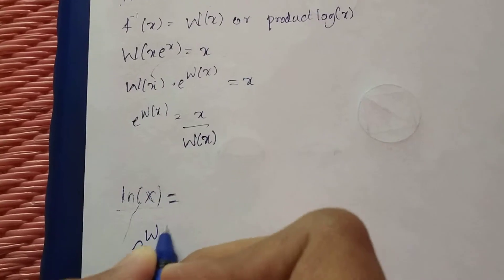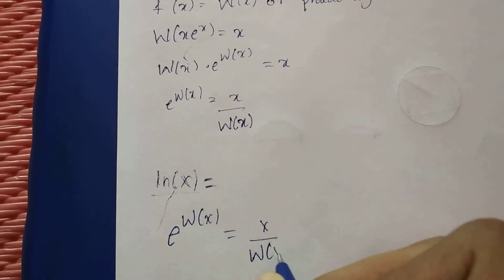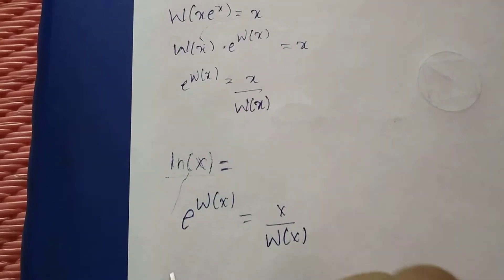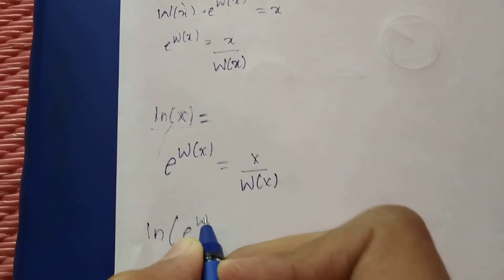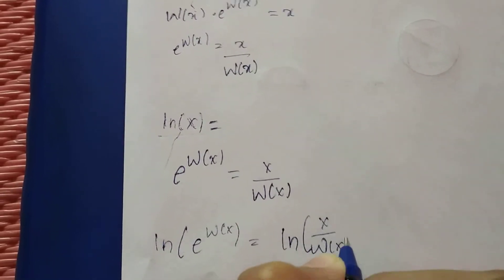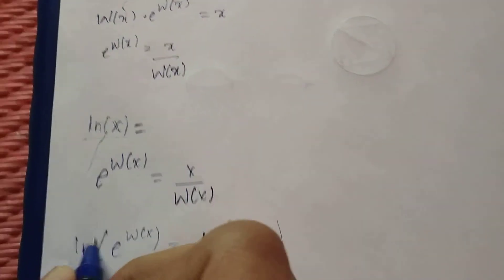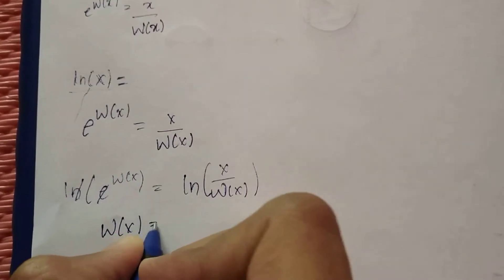We can see that e^W(X) equals X divided by W(X). I can now take the natural logarithm on both sides, so ln(e^W(X)) equals ln(X/W(X)). Here ln and e cancel, so W(X) equals ln(X) minus ln(W(X)).